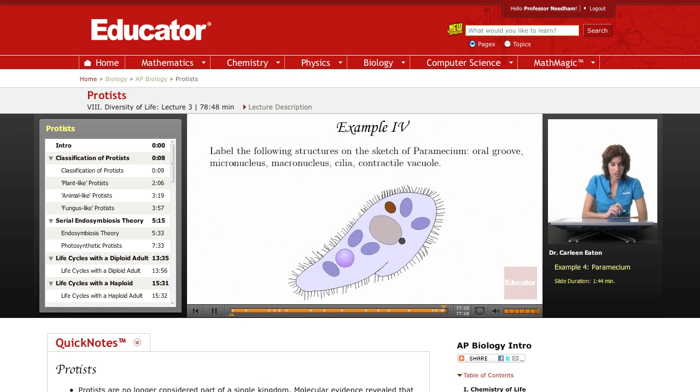Final question is, label the following structures on the sketch of a paramecium. So parameciums are a type of ciliate, and we saw this sketch before, and this is a type of ciliate.